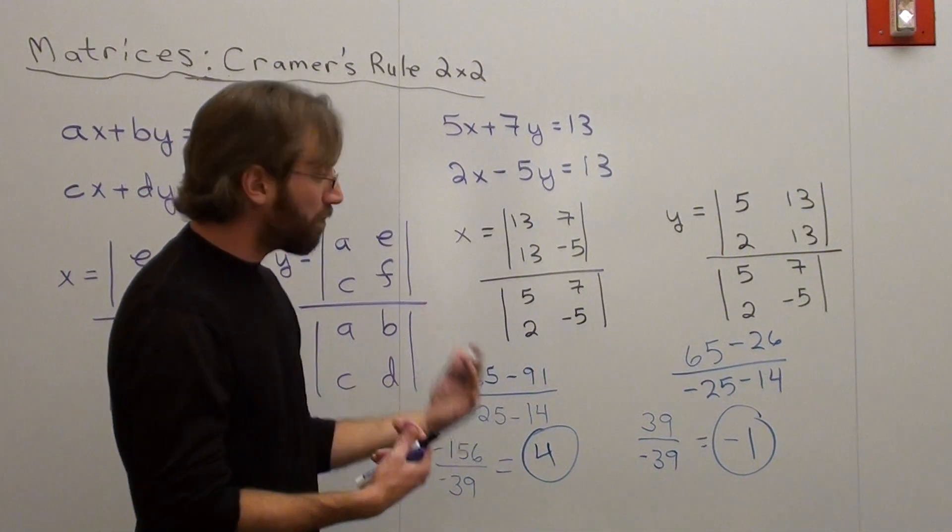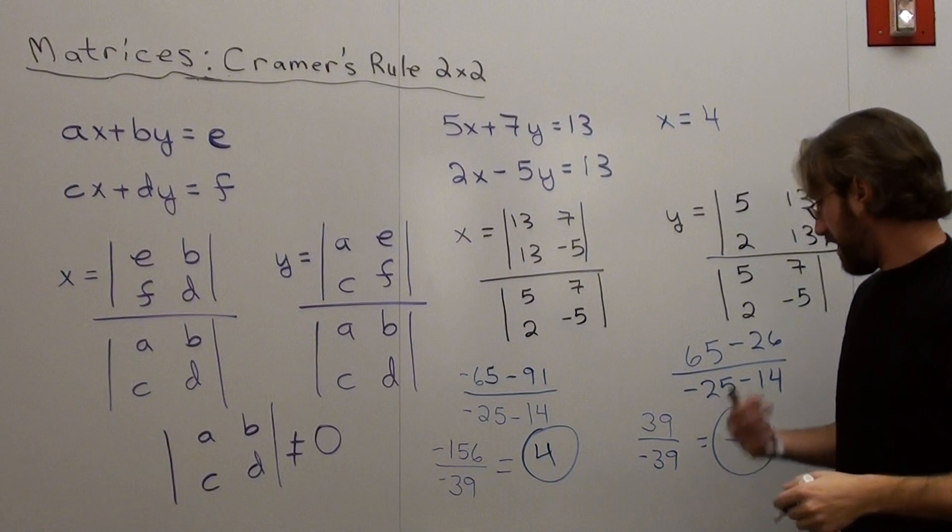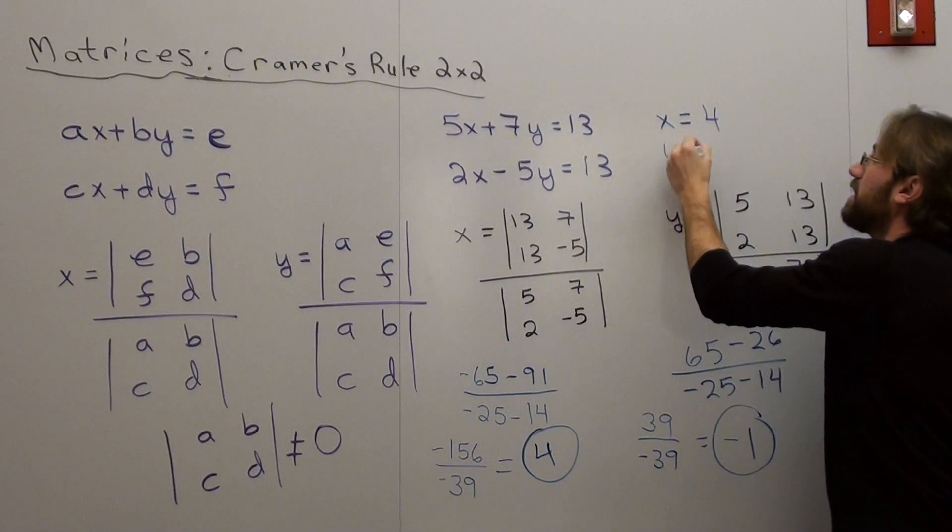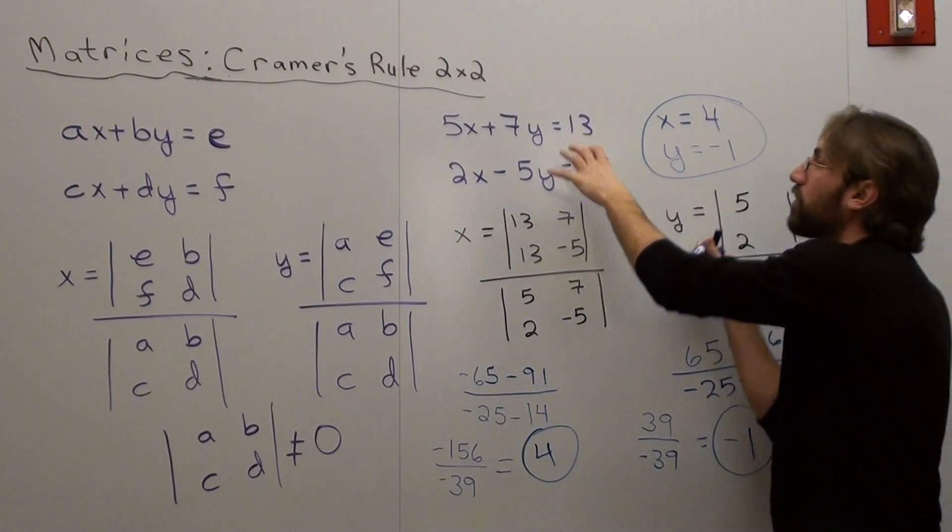Those are my answers. So basically, my x is 4, and my y is negative 1. This is the only solution that's true. This is where both equations will cross.